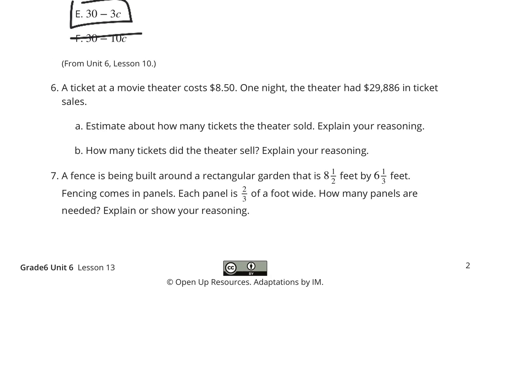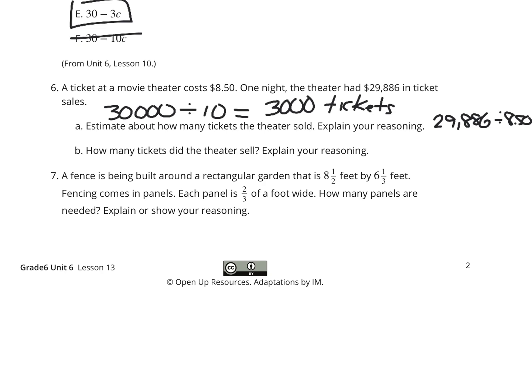Question 6: a ticket to the movie theater costs $8.50. One night, the theater had $29,886 in ticket sales. Part 1: estimate how many tickets were sold. If I round $29,886 to $30,000 and $8.50 to about $10, that's about 3,000 tickets. For the exact number, dividing $29,886 by $8.50 gives 3,516 tickets — a lot of people.